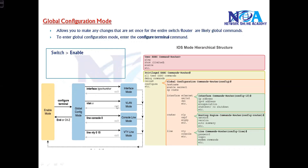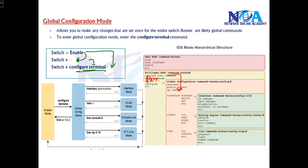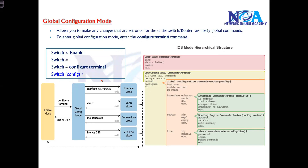Just as typing enable takes you from user mode to privilege mode, from privilege mode you need to type configure terminal — or the shortcut config t — to enter global configuration mode. You cannot jump directly from user mode to global configuration mode; you must pass through privilege mode first. Once inside global configuration mode, you will see a prompt that looks like config hash, indicating you are in global configuration mode.